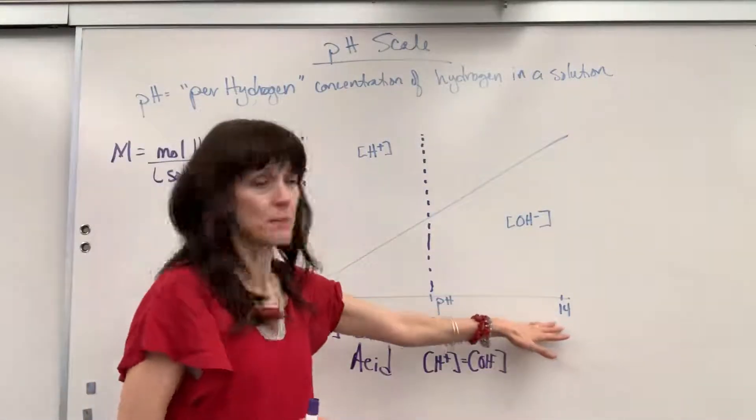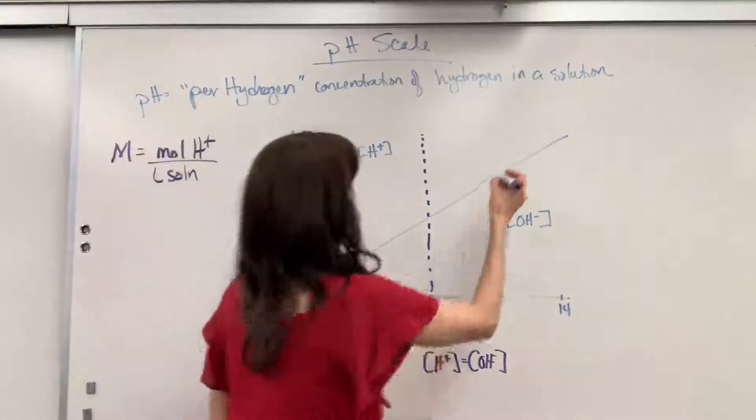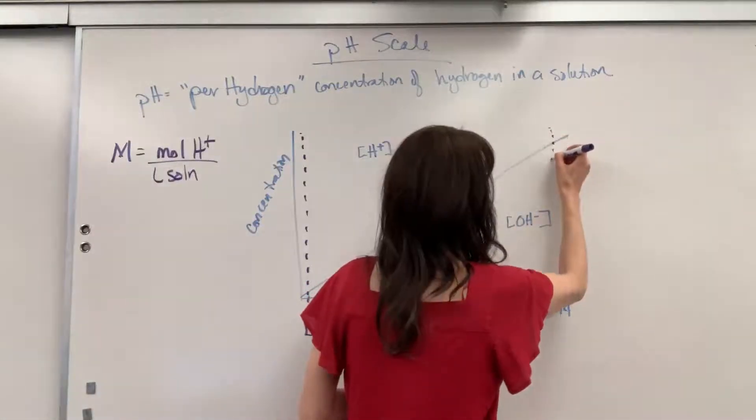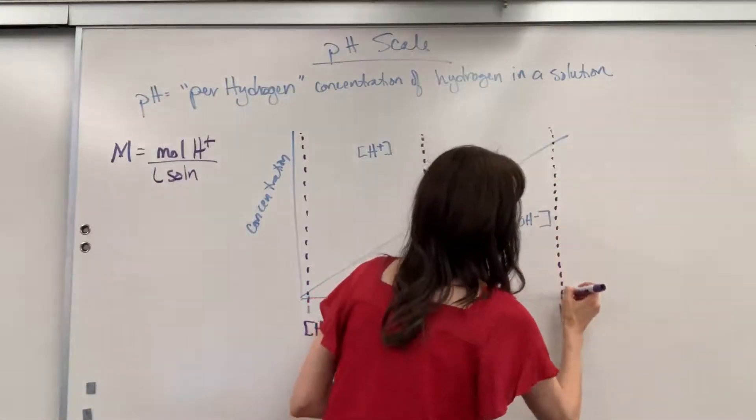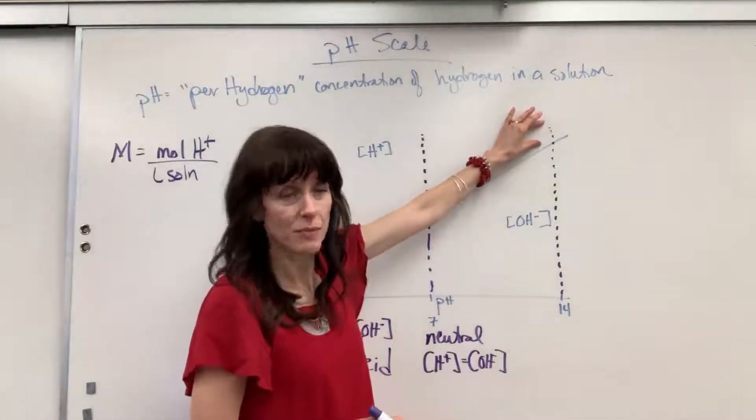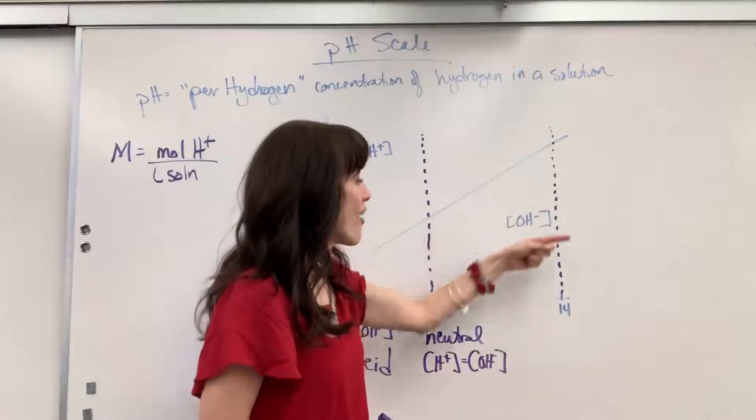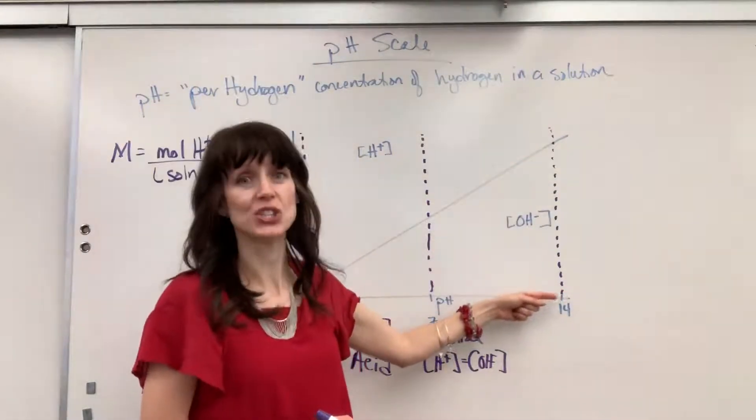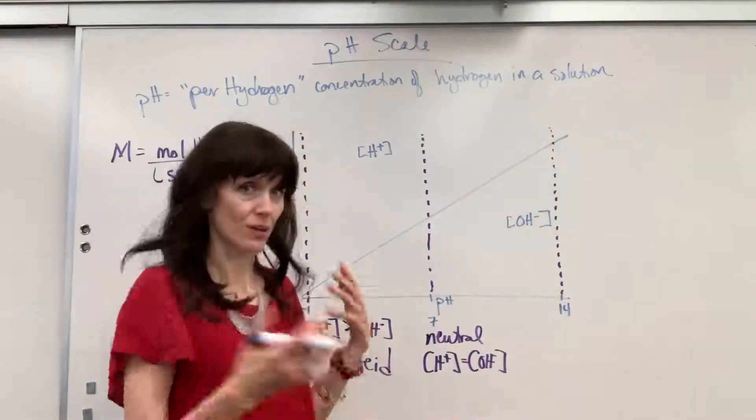Next, let's look at a base. So if we've got a base, and I'm going to pull down this line so you can see it visually. Notice the amount of the hydrogen, that concentration is small, whereas the concentration of the hydroxide is huge, really big.